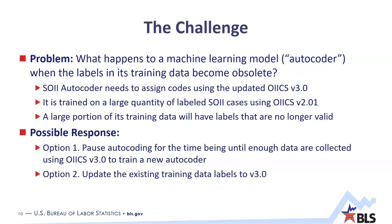The table shown on this slide shows the counts of unique codes by OIICS type. Overall, the number of codes stayed relatively the same going from version 2.01 to version 3, with some decrease in the number of codes mostly coming from event. This newly updated code is expected to be used in data collection starting next year. Starting in 2024, the SOII autocoder will also be required to assign codes using the updated OIICS. This poses a challenge because our autocoder is trained on a large quantity of labeled SOII cases using the previous OIICS version 2.01 and is unable to assign the new set of codes introduced in version 3.0.